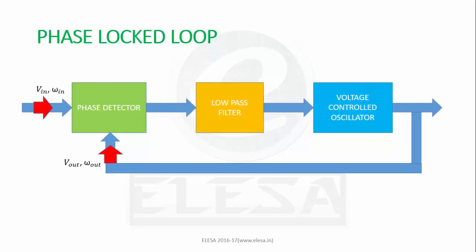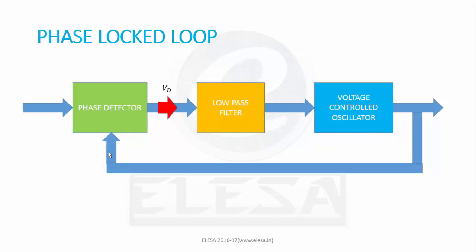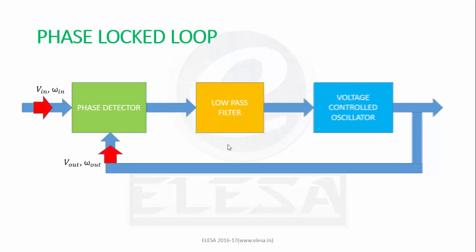The input signal V_in with an input frequency ω_in is passed through a phase detector. The phase detector compares the phase of incoming signal V_in against the phase of VCO output V_out and develops a voltage V_D proportional to the phase difference. This voltage is then sent through a low pass filter.